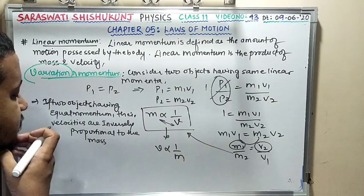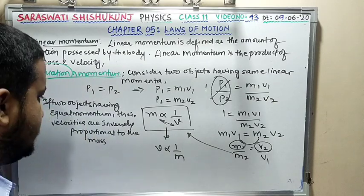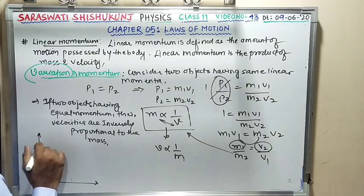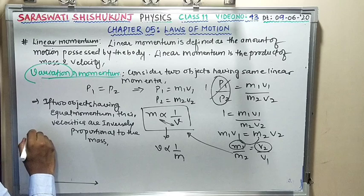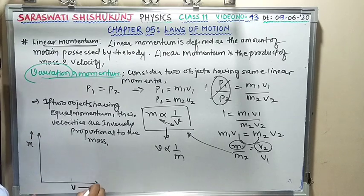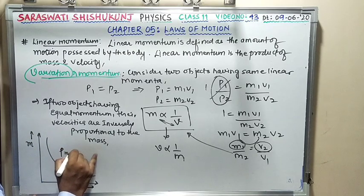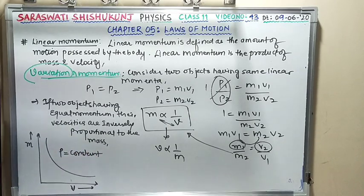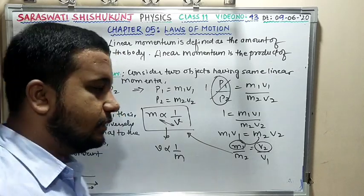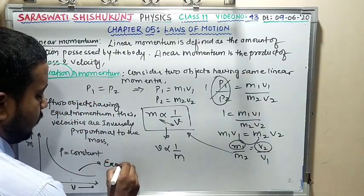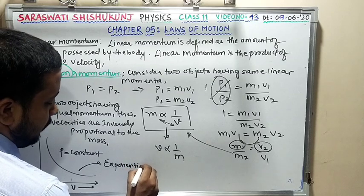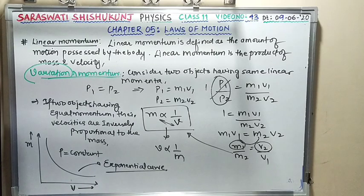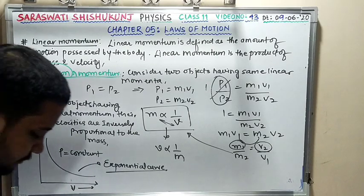Plotting M versus V (at constant momentum) gives an exponential (hyperbolic) curve, showing that as one quantity increases, the other decreases. This completes Case 3.